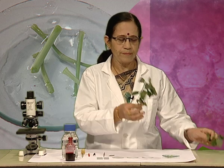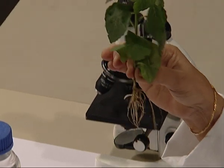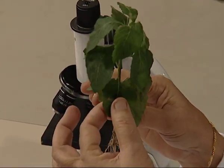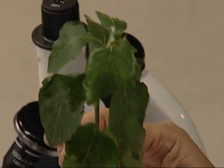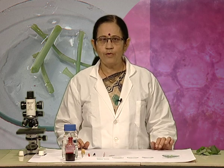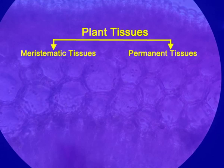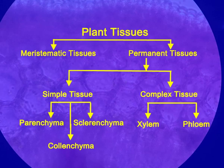Observe this plant. This plant has roots, stem, and leaves. Each of these organs is made up of tissues, and plant tissues are mainly of two types: meristematic tissues, which are dividing cells, and permanent tissues, which are non-dividing cells. Permanent tissues are further divided into simple and complex tissues. Simple tissues can be grouped into parenchyma, colenchyma, and sclerenchyma, whereas xylem and phloem are examples of complex tissues.